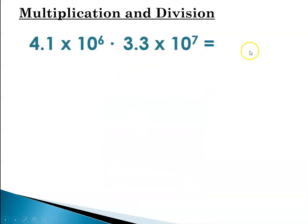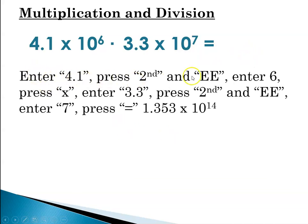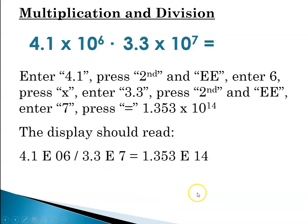So now, 4.1 times 10 to the 6 times 3.3 times 10 to the 7. I would enter 4.1, press 2nd, press EE for the scientific notation in the pink calculator. Then I would enter my 6, then times, and then enter my 3.3, the coefficient. Press 2nd, EE to get in my power of 10, which is a 7. Press equal, and I will get that. And then the display should read something like this. I'll show you that in a moment. And then you're going to round your answer before you report it to me to 1.4 times 10 to the 14, two significant figures.